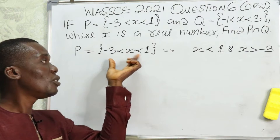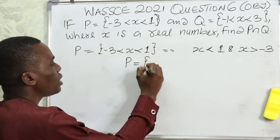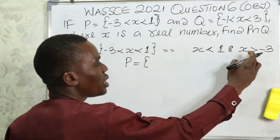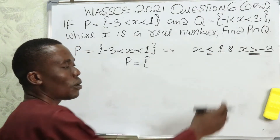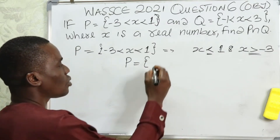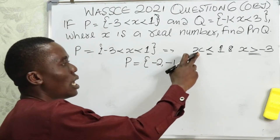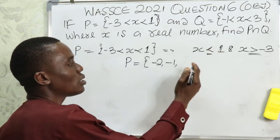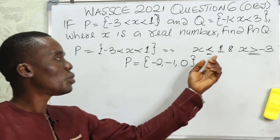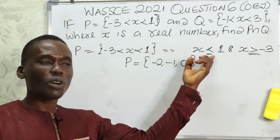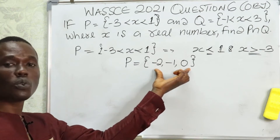So the values of P — we are told x is greater than minus three, so minus three is not included. We have minus two, minus one. And we are told x is less than one, so zero will be there, but one is not included because x is not less than or equal to one. So the range of values for this inequality is: minus two, minus one, and zero.